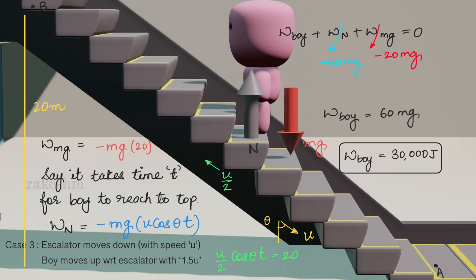Finally, the work done by the boy is 30,000 joules. The place where you can make a mistake in this question is if you ignore the work done by the normal reaction — that is where there is scope for error. If you could understand this, then you have understood this problem.